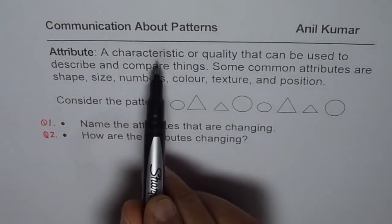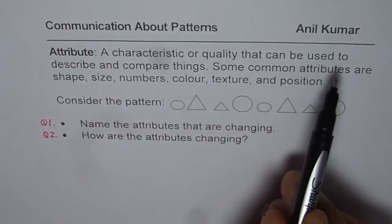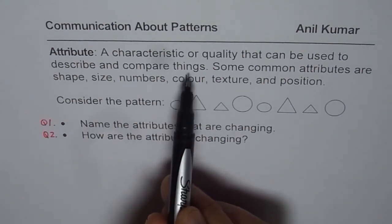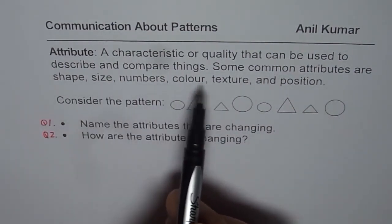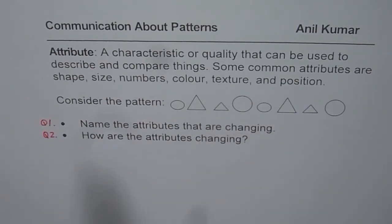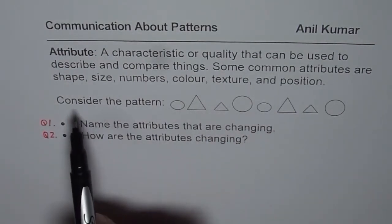A characteristic or quality that can be used to describe and compare things. Some common attributes are shape, size, number, color, texture and position. Here is an example. Consider the pattern.